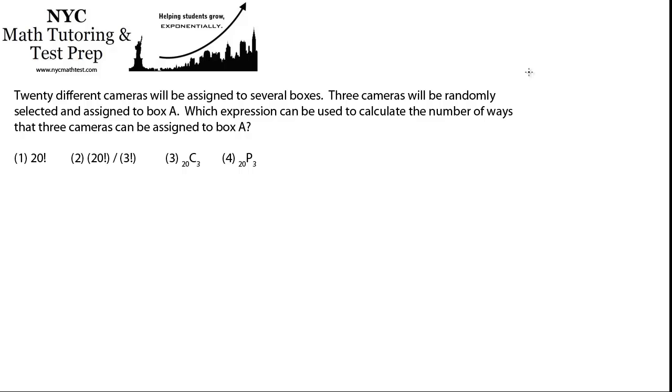Twenty different cameras will be assigned to several boxes. Three cameras will be randomly selected and assigned to box A. Which expression can be used to calculate the number of ways that three cameras can be assigned to box A?